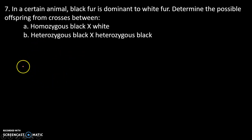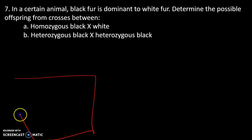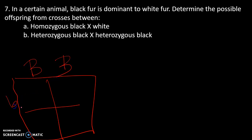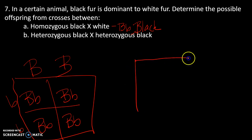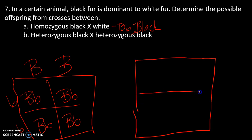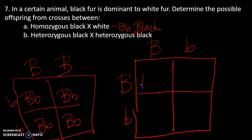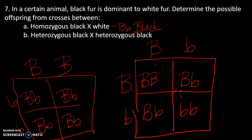Number seven involves a couple of crosses with fur color. First, if we cross homozygous black dominant with white (homozygous recessive), all offspring will be heterozygous, meaning we see only black fur. Now for the second cross — heterozygous black with heterozygous black — we start to see predictable patterns. The genotypic ratio is 1:2:1, and phenotypically it's a 3:1 ratio: three black for every one white.